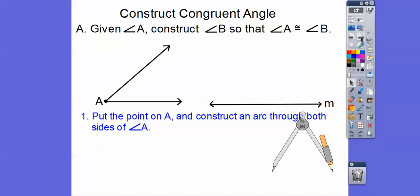We're going to put a point on A. So I'm sorry, put the point of our compass on A and we're going to construct an arc through both sides of angle A. So I'm going to go ahead and put the point right here and construct an arc through both sides of angle A right there.